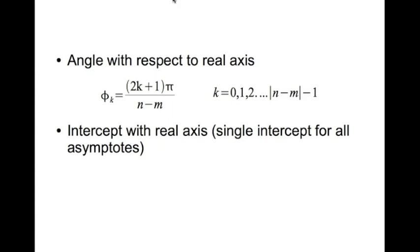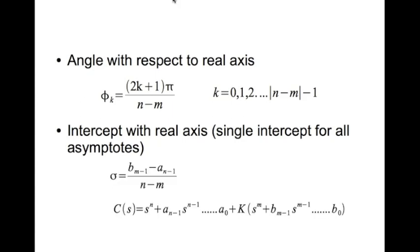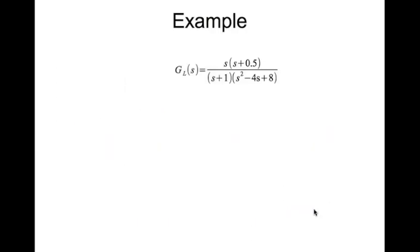The intercept of the asymptotes with the real axis — there is a single intercept for all asymptotes — is given by σ = (b_{m−1} − a_{n−1}) / (n − m). The coefficients b_{m−1} and a_{n−1} are obtained from the characteristic equation, where a_{n−1} is the coefficient of s^{n−1} and b_{m−1} is the coefficient of s^{m−1}.